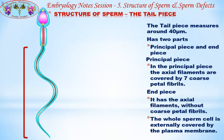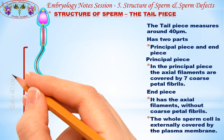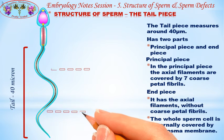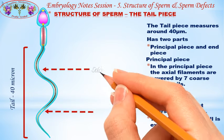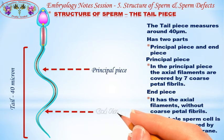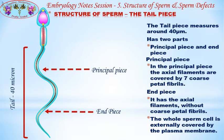The last part is the tail piece. The tail piece measures around 40 microns and has two parts: the principal piece and the end piece. In the principal piece, the axial filaments are covered by seven coarse spiral fibrils, but the end piece has axial filaments without the coarse spiral fibrils. The whole sperm cell is externally covered by the plasma membrane.